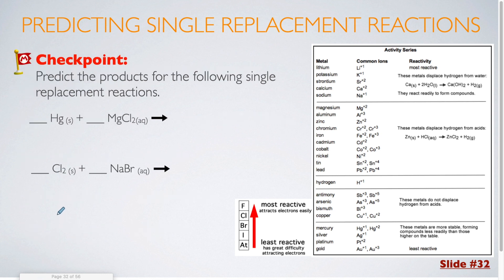Here we have a couple of checkpoints, and we're going to solve these together from scratch. In this example, I have mercury, and since this is a metal, I'm going to be comparing it to the other metal, which is magnesium. Mercury is at the very bottom of the list — it is definitely lower than magnesium, so it is not powerful enough to kick that magnesium out. So I'm simply going to write no reaction.